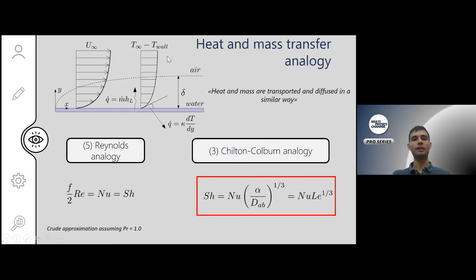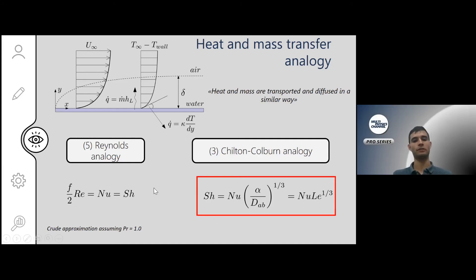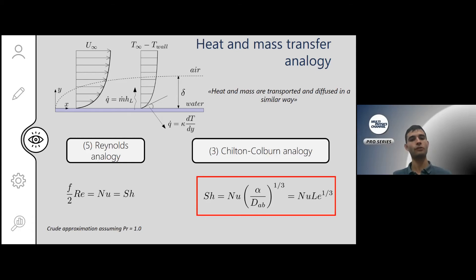Once we have the Nusselt number, given the idea that heat and mass diffuse in a similar way, we can set the Nusselt number equal to the Sherwood number. The Sherwood number encodes the mass convection coefficient in a dimensionless way, analogously to the Nusselt number. This is the Reynolds analogy, which states that not only are the Nusselt and Sherwood numbers equal, but they are also related to the friction coefficient f — meaning heat, mass, and momentum are all transported and diffused in an analogous way.